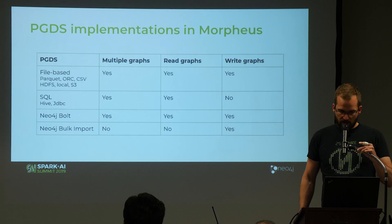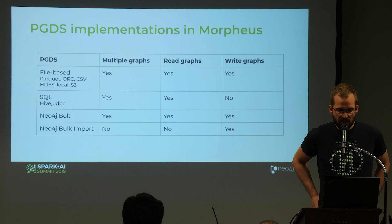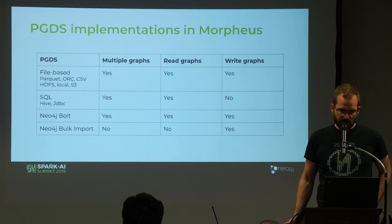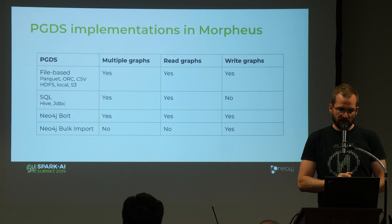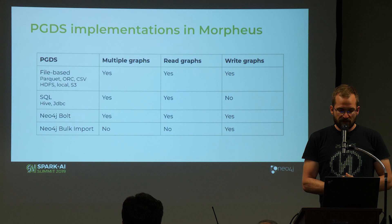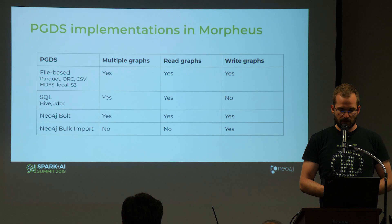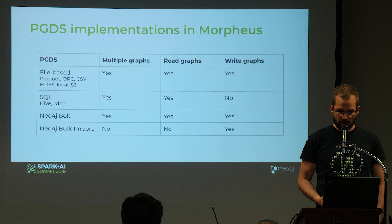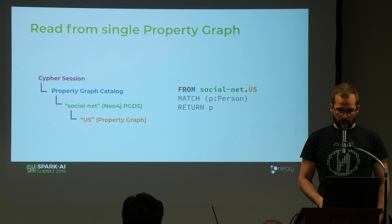What are the available property graph data sources? We can store to the file system using the file-based property graph data source, which supports Parquet, ORC, and CSV and writes to everything Spark can write to. Then there's the SQL property graph data source, which allows loading property graphs from relational databases using JDBC or Hive. There are also two Neo4j property graph data sources: one using Bolt — Neo4j's binary protocol for network transfer — to connect to a running Neo4j database, and the Neo4j bulk import which dumps a property graph into a Neo4j-specific import format for offline database creation, which is the fastest way to write a Neo4j database.